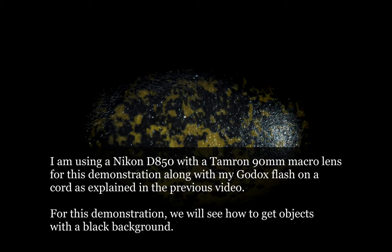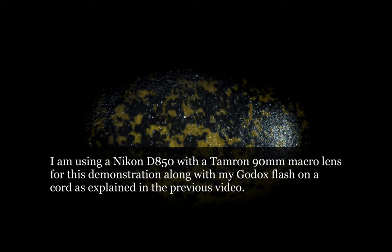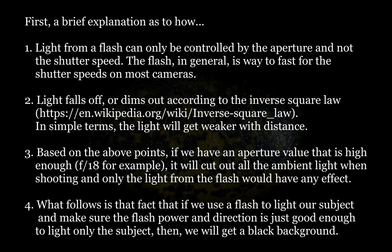For this video, we will see how to get objects with a black background. But first, a brief explanation as to how we get the black background. The first thing to understand is that light from a flash can only be controlled by the aperture and not the shutter speed. The flash in general is way too fast for the shutter speeds on most cameras, and only aperture can control the amount of light we get from it.